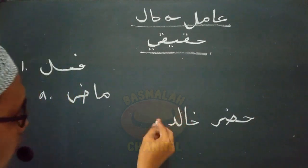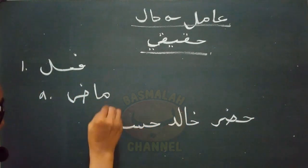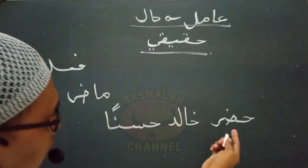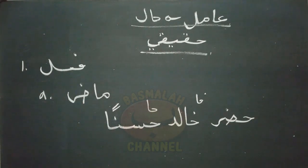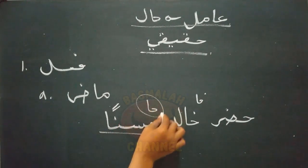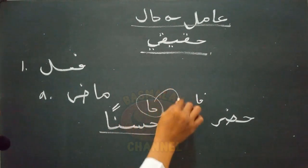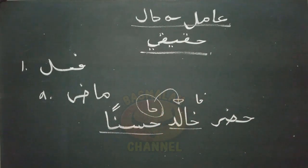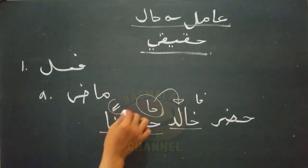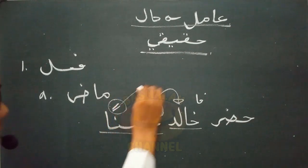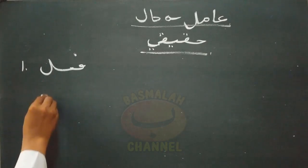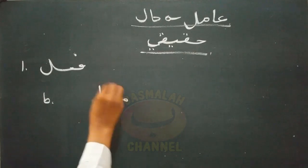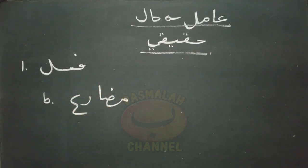Fi'il tersebut bisa berupa fi'il madhi. Contohnya seperti lafat 'habaro kholidun hasanan' - hadir kholid dalam keadaan bagus atau tampan. Lafat hasanan ini adalah kalimat isim yang kedudukannya sebagai hal yang menjelaskan keadaan daripada sahibul halnya. Lafat hasanan ikrobnya wajib dinasobkan dan yang menasobkan adalah amilnya yang berbentuk fi'il madhi.